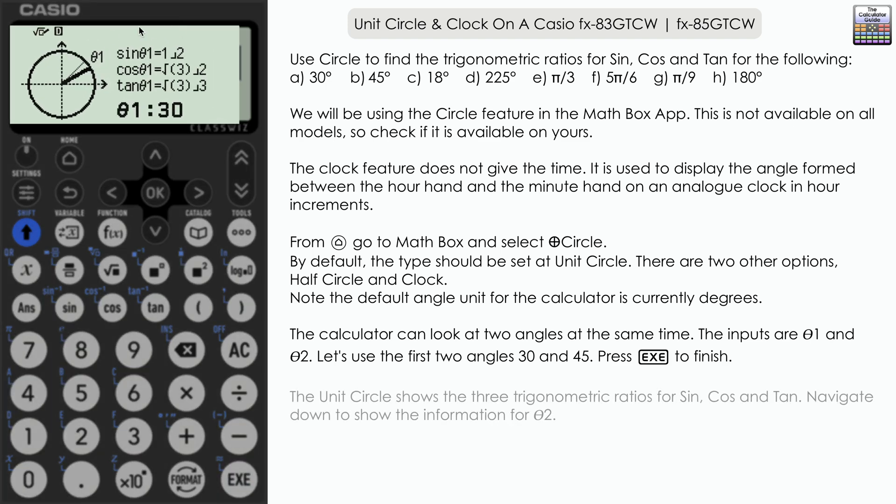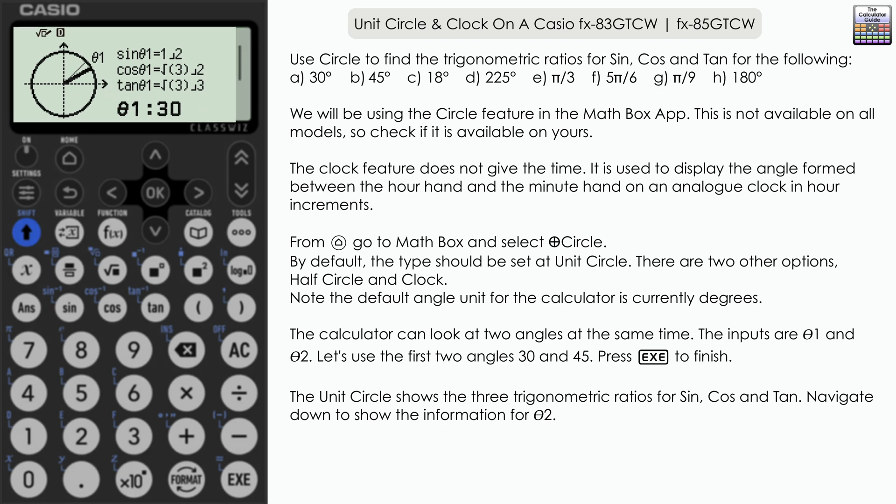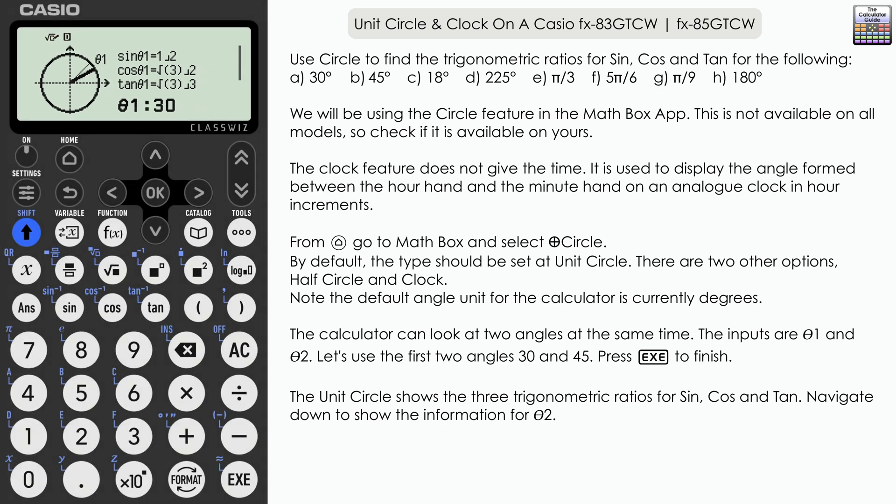Here we have the unit circle. This feature gives you all three trigonometric ratios for your given angle. For a theta of 30, sine 30 is a half, cosine 30 is square root 3 over 2, tan 30 is root 3 over 3. All of them are exact values as we'd expect with an angle of 30 degrees.